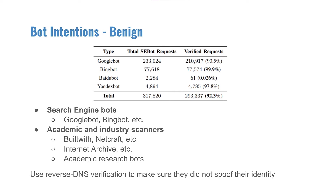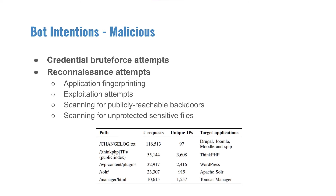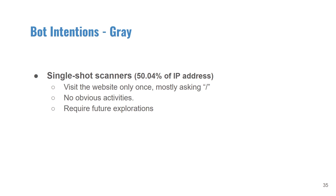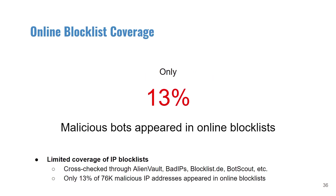Benign bots are mostly search engine bots, academic, and industry scanners like Google Bot, Bing Bot, or Internet Archive — verified using reverse DNS. Malicious bots include credential brute-force attempts, reconnaissance, application fingerprinting, exploitation attempts, scanning for publicly reachable backdoors, or unprotected sensitive files. There are 50% of IP addresses that only sent a single request and did not exhibit obviously malicious behavior, requiring future exploration. We also compared our malicious IP list to 9 popular IP block list databases, and unfortunately only 13% of malicious IP addresses appeared in any online database, demonstrating the limited coverage of existing block lists.